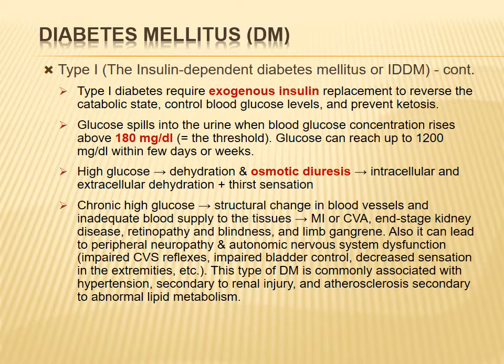Diabetic patients are also prone to hypertension. The reason is that atherosclerosis in the kidney reduces blood supply, leading to increased renin secretion, increased angiotensin formation, and ultimately hypertension. Atherosclerosis itself is secondary to abnormal lipid metabolism.